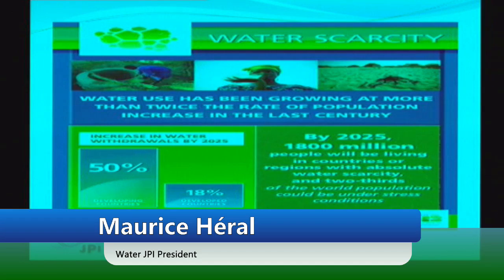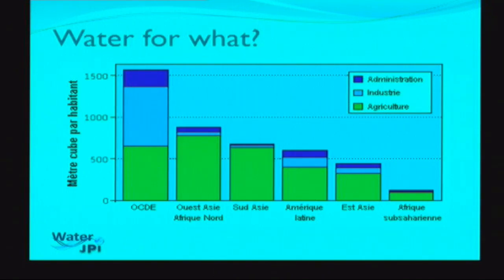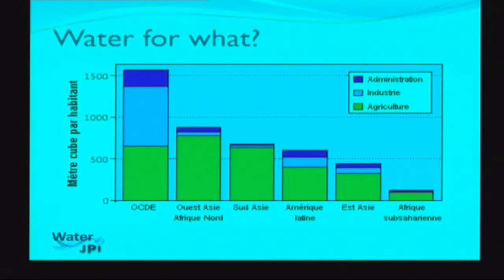In developing countries, water demand will increase by about 50% by 2025, and for developed countries by 18%. The main use of water is agriculture — shown in green — followed by industry and human consumption. Even in OECD countries with 1,500 cubic meters per inhabitant, and in sub-Saharan countries with only 100 to 150 cubic meters, the main part is used for agriculture.